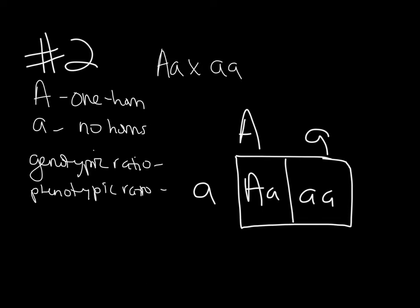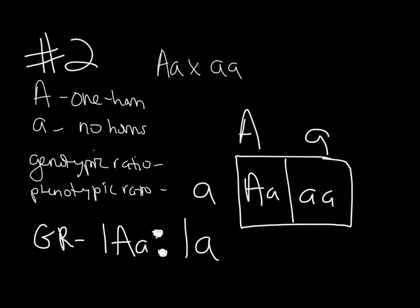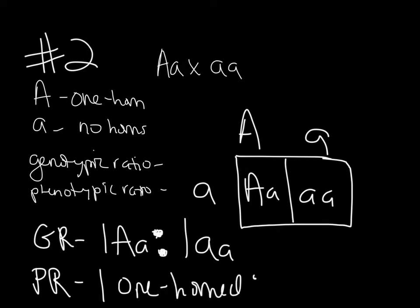So there's our cross. The genotypic ratio is one big A little a to one little a little a — it's very important you make those colons big enough to see. The phenotypic ratio is what they look like. Here we have one offspring with big A little a, so it shows the dominant, which is one horn. So for every one one-horned purple people eater, we expect one no-horned purple people eater.